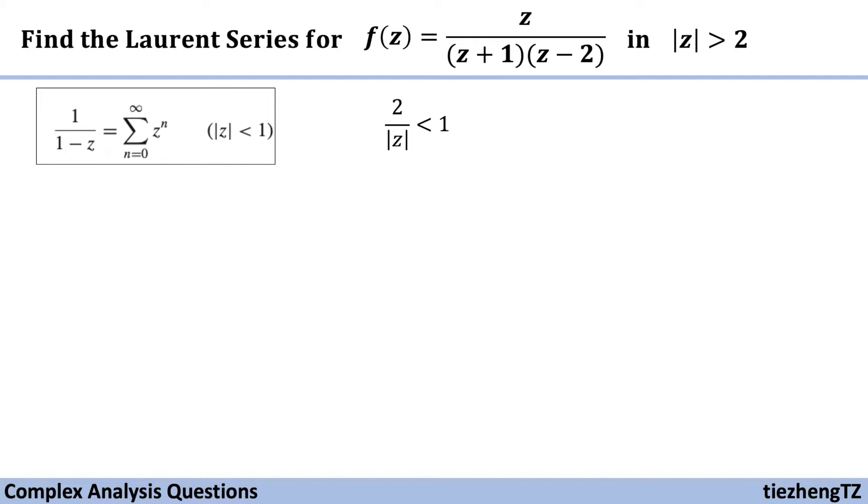Alright, so the next step is we need to do something to this given function to make sure we have 1 - 2/z in the denominator part. So just rearranging this given function step by step, we have within the parentheses 1/(1 + 1/z) and also 1/(1 - 2/z).